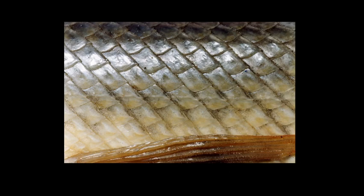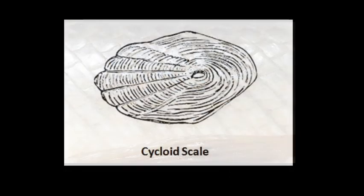Next type of scale are cycloid scales. These are thin, flexible, translucent plates, circular in outline, thicker in center and marked with several concentric lines of growth.